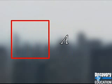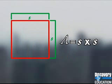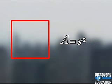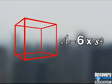All the faces of a cube have equal areas. The area of a rectangle is its length times its width, but the length and width of a square are the same. So the area is the length of a side times the length of another side, or s squared. We can find the surface area of the entire cube by multiplying the area of one face by six — the total number of faces.